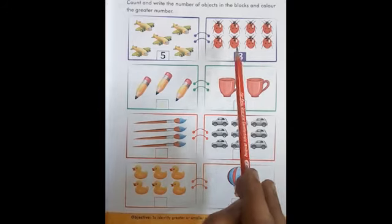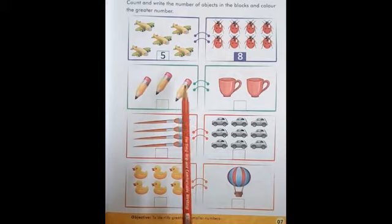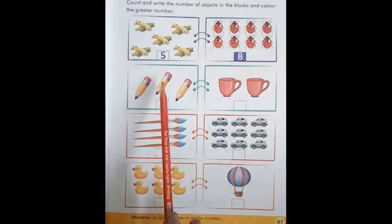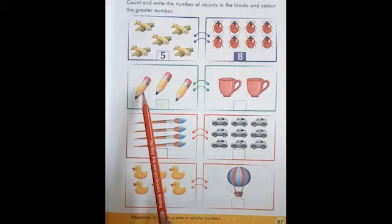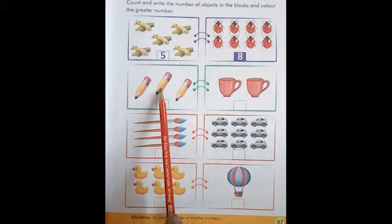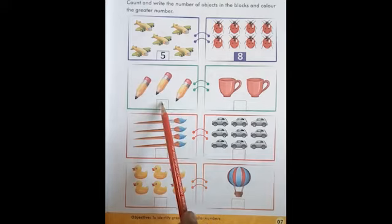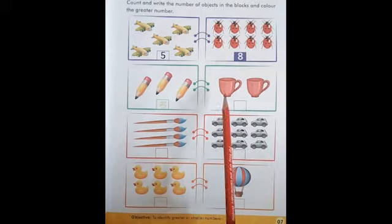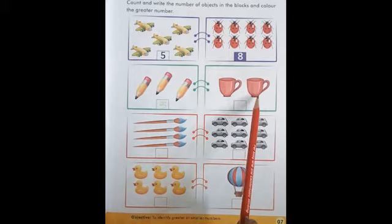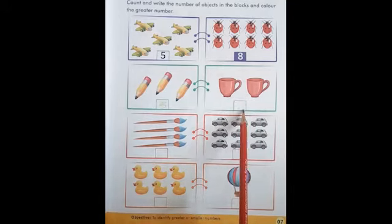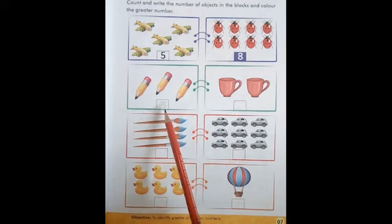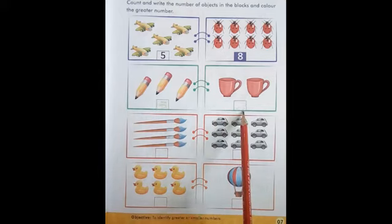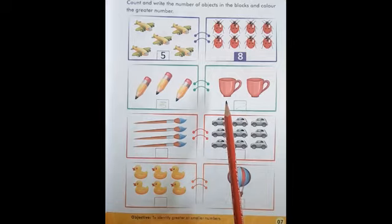These are pencils. Count them: one, two, three. Write it: three. These are cups. Count them: one, two. Write it: two. Three is a greater number and two is a smaller number. Color the greater number.